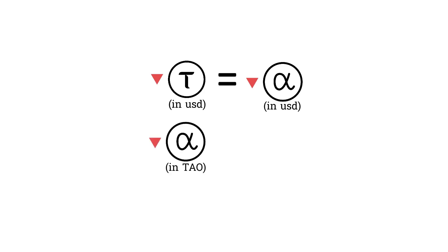And number two, if your subnet performs poorly, its alpha price will go down relative to Tau, and therefore in US dollars as well. So investors that hold alpha are saying two things.